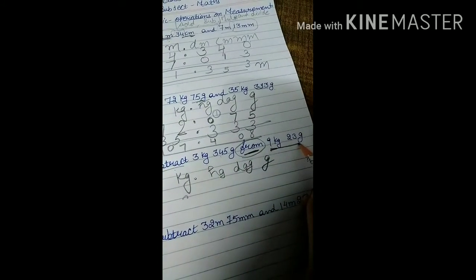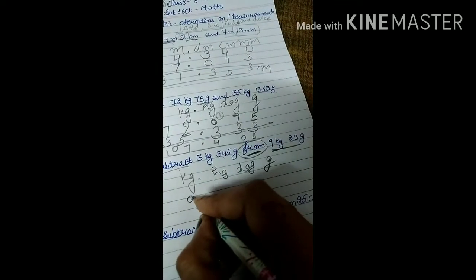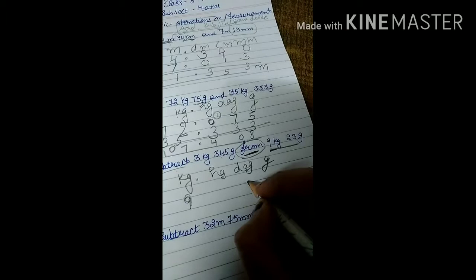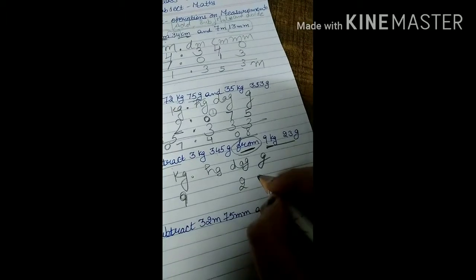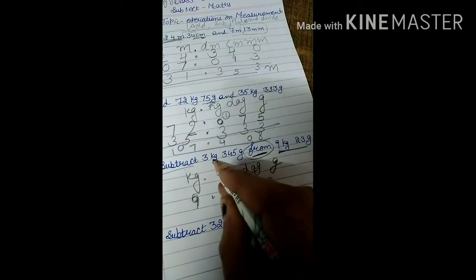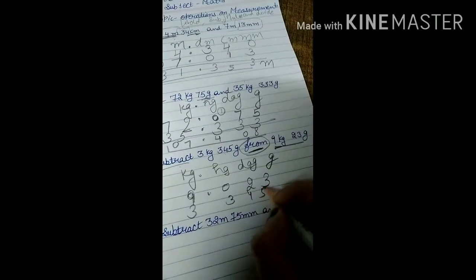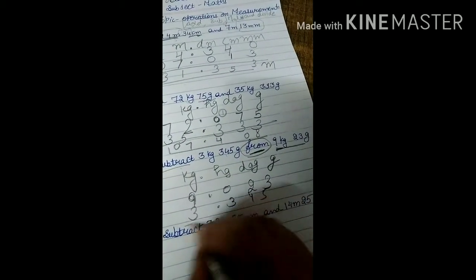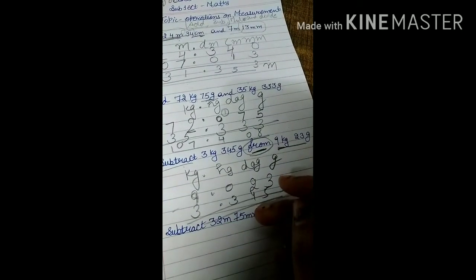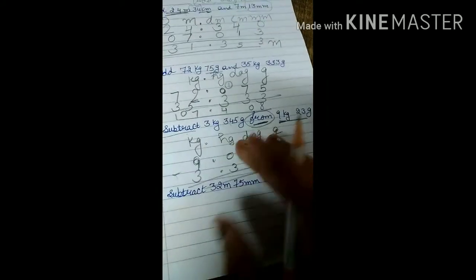Since we are subtracting 'from' a number, that number goes on top: 9 kilograms 23 grams. Write 9 kg, put the point, then 23 grams. Where nothing is given, write zero. Then write 3 kg 345 grams below it. Put the decimal point and perform the subtraction — you know how to do simple subtraction.